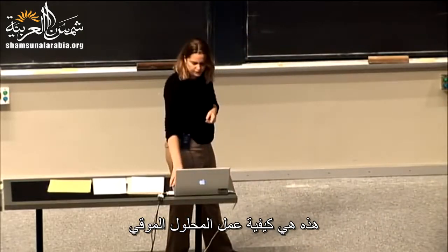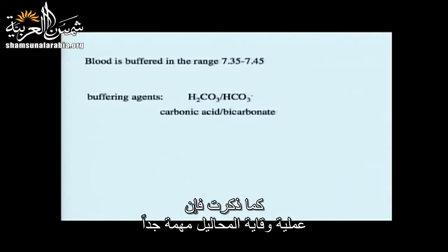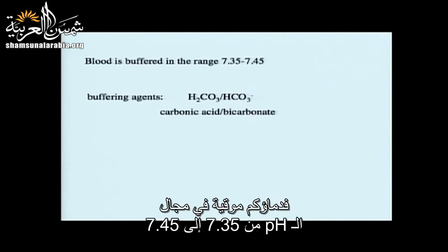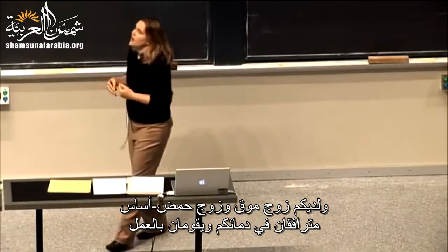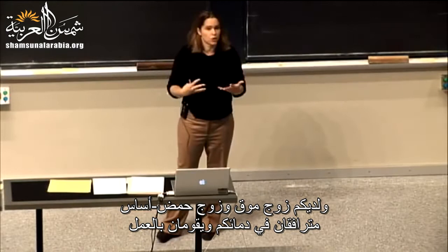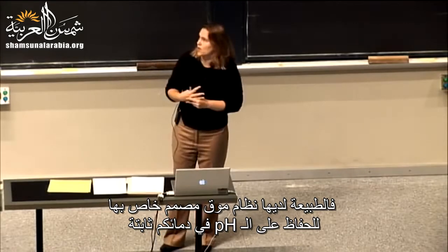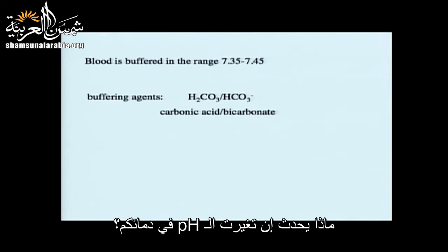Buffering is very important in your blood. Your blood is buffered in the range of pH 7.35 to 7.45, and there is a conjugate acid-base pair in your blood that does the work. Nature has its own buffering system designed to keep the pH of your blood constant. What happens if the pH of your blood changes?